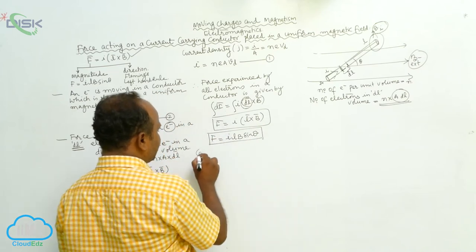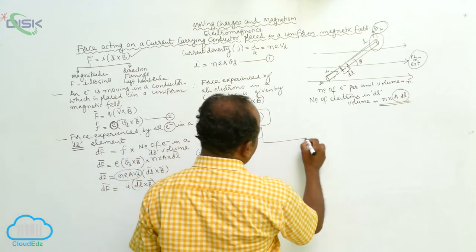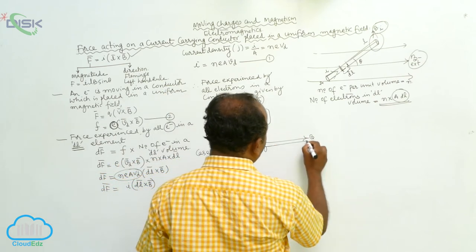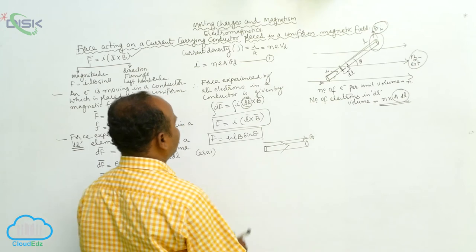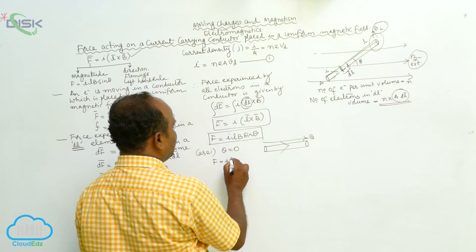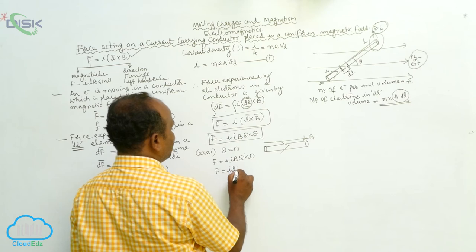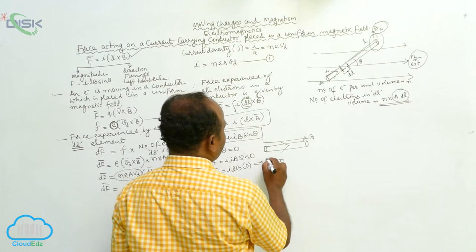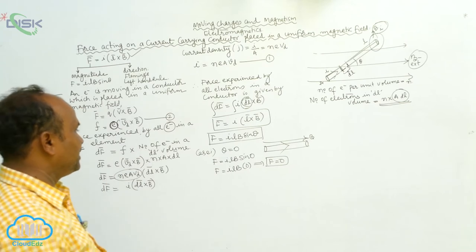Case 1: suppose this is the magnetic field B, and the current-carrying conductor is placed along the magnetic field, so θ = 0. Then F = ILB sin0 = 0. Therefore, when the current-carrying conductor is placed along the magnetic field, it will not experience any force.